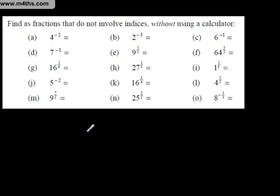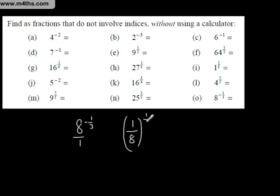8 to the negative 1 third. Let's put a 1 underneath it. Let's turn it upside down and make it to the positive 1 third. The 3rd root of 8 is 2. So we can now write this as 1 over 2. 1 to the 1 third power is just 1.